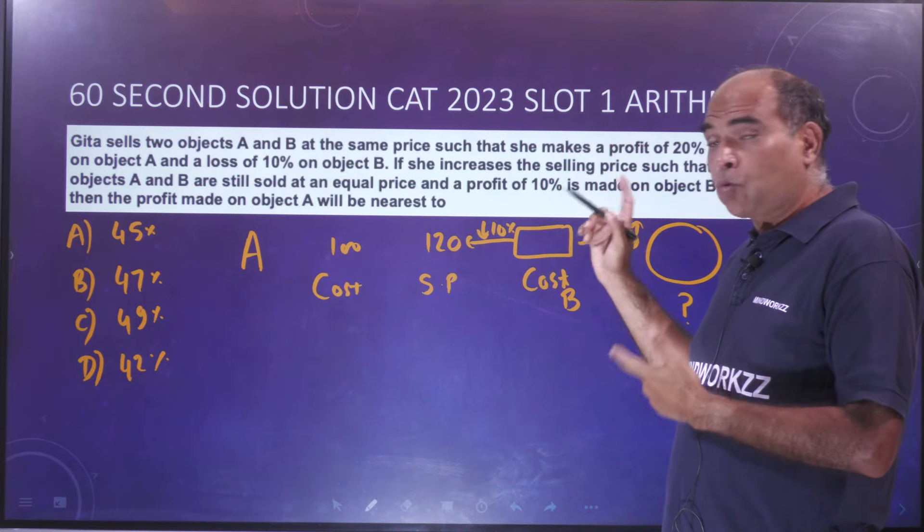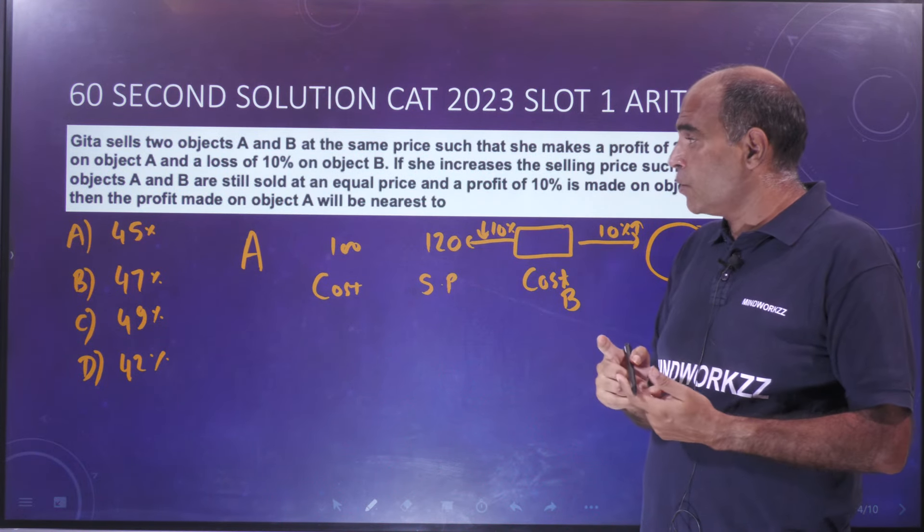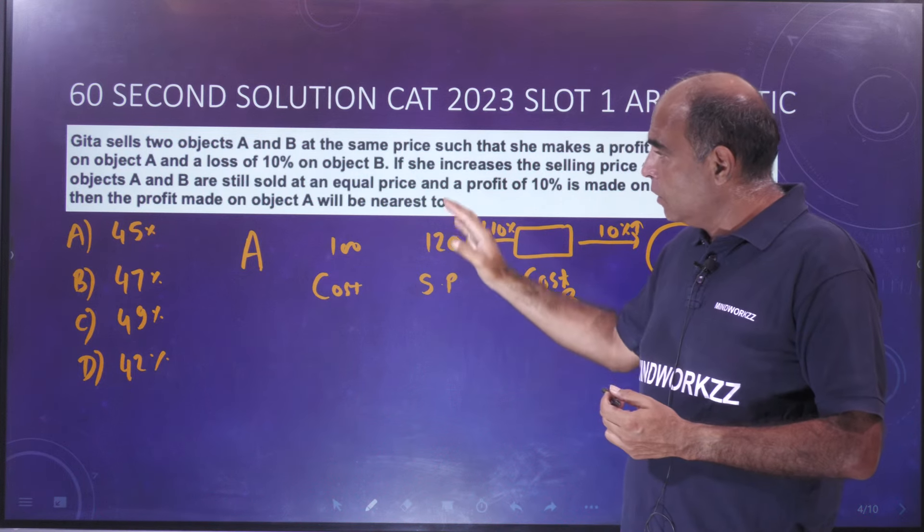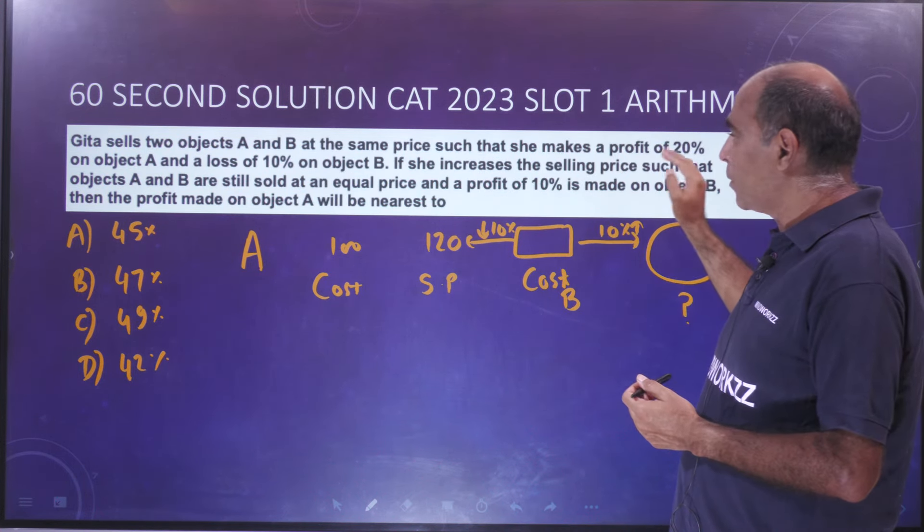Hey guys, back with the CAT 2023 Slot 1 Arithmetic question. 60 second solution for you. Two thoughts and you'll get this done. Geeta sells two objects A and B at the same price such that she makes a profit of 20% on object A.